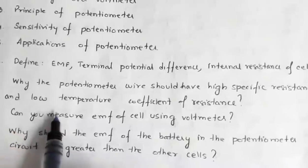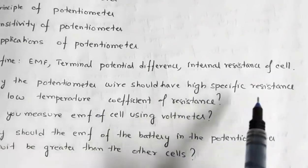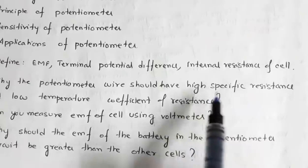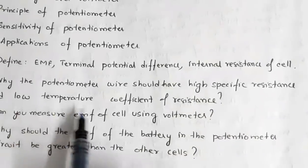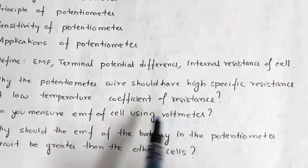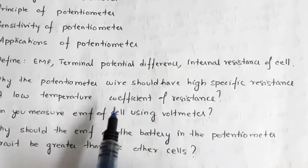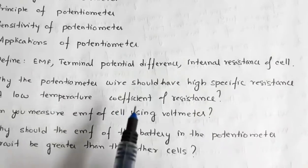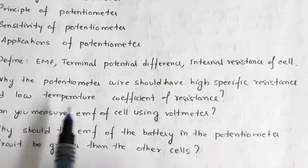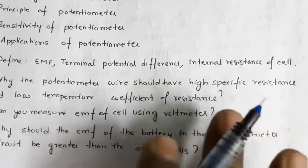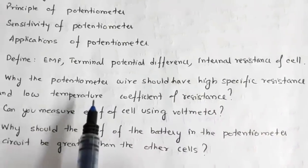Why should the potentiometer wire have high specific resistance and low temperature coefficient of resistance? High specific resistance implies high resistance of the wire. Low temperature coefficient of resistance implies that when the temperature changes, the variation in resistance will be less — so the dependence of resistance on temperature will be low, and you will be able to conduct the experiment without much error.